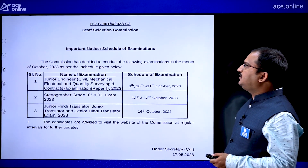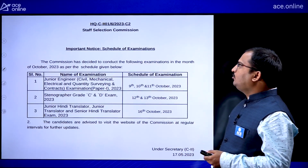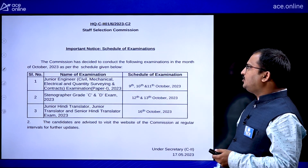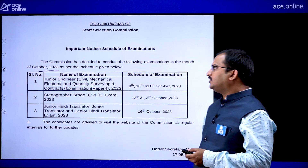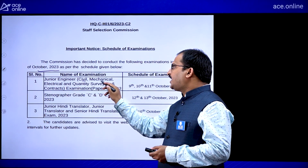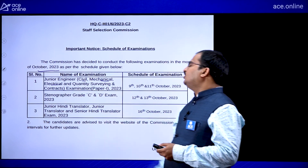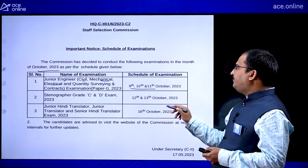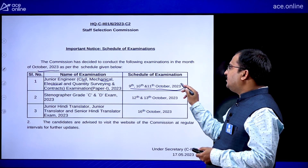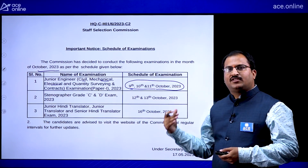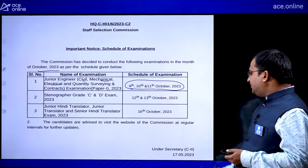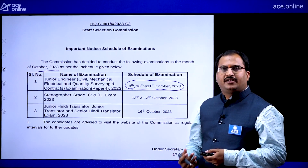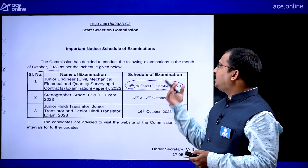Here is the schedule of examination given by the Staff Selection Commission for the Junior Engineer examination, which will be held in October 2023 for Civil, Mechanical, and Electrical Engineering students. The 9th, 10th, and 11th October 2023 is the schedule of examinations, announced on 17th May 2023.